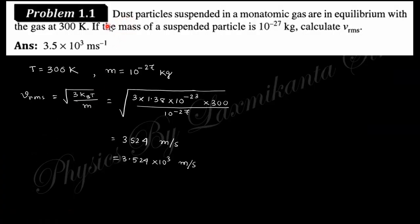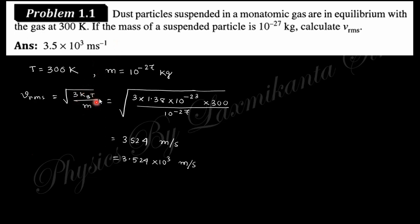Let's start with problem 1.1, which says: dust particles suspended in a monoatomic gas are in equilibrium with the gas at a given temperature. Given the temperature and the mass of the suspended particle, you need to find the RMS velocity. The formula for RMS velocity of a gas particle is the square root of 3kbT divided by m, where kb is Boltzmann's constant, T is temperature, and m is mass.